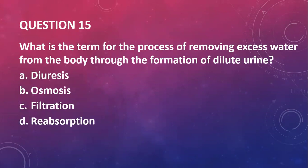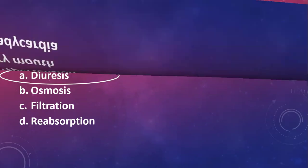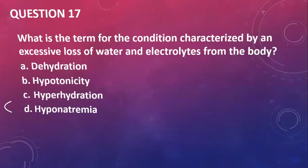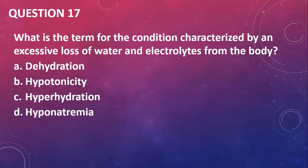Question fifteen: what is the term for the process of removing excess water from the body through formation of dilute urine? If you say diuresis, you are right. Osmosis is something else. Question sixteen: which is a common symptom of dehydration? The first thing you're going to have will be a dry mouth. You feel thirsty. Question seventeen: what is the term for the condition characterized by excessive loss of water and electrolytes? Dehydration.